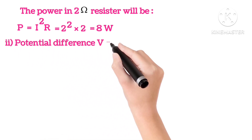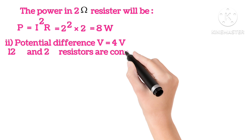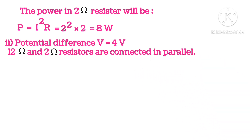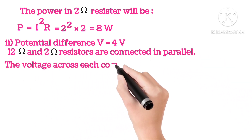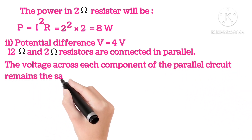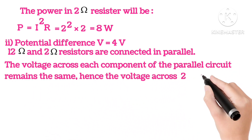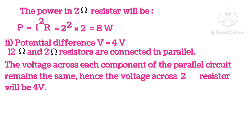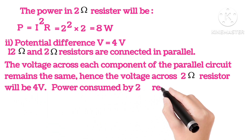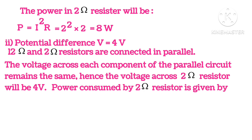In the second case, potential difference is 4V. Resistors are 12 and 2 ohms. Now the voltage across each component of the parallel circuit remains the same. Hence, the voltage across 2 ohms resistor will also be 4V.